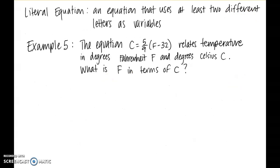Our last topic to discuss in this section is that of a literal equation, and this was learned in Algebra 1. Literal equation is an equation that uses at least two different letters as variables. So here we see in example 5, the equation C equals 5/9 times the quantity F minus 32 relates temperature in degrees Fahrenheit F and degrees Celsius C. What is F in terms of C? That means we want to solve for F, which means we want to isolate the variable F, and I'll show you how to do that.